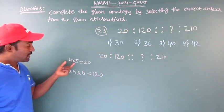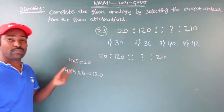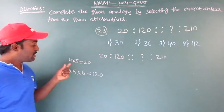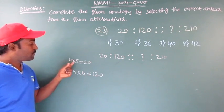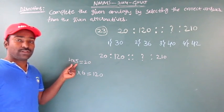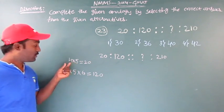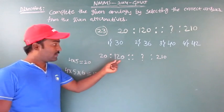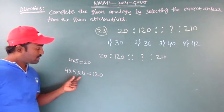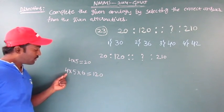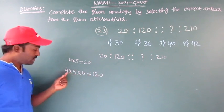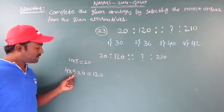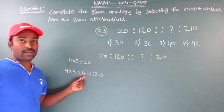So this is the analogy — they multiplied consecutive numbers. To get the first number 20, they multiplied 4 and its consecutive number 5: 4 into 5 gives 20. To get 120, they multiplied consecutive numbers 4, 5, and 6: 4 into 5 is 20, and 20 into 6 is 120. The same analogy can be used to get the missing number.